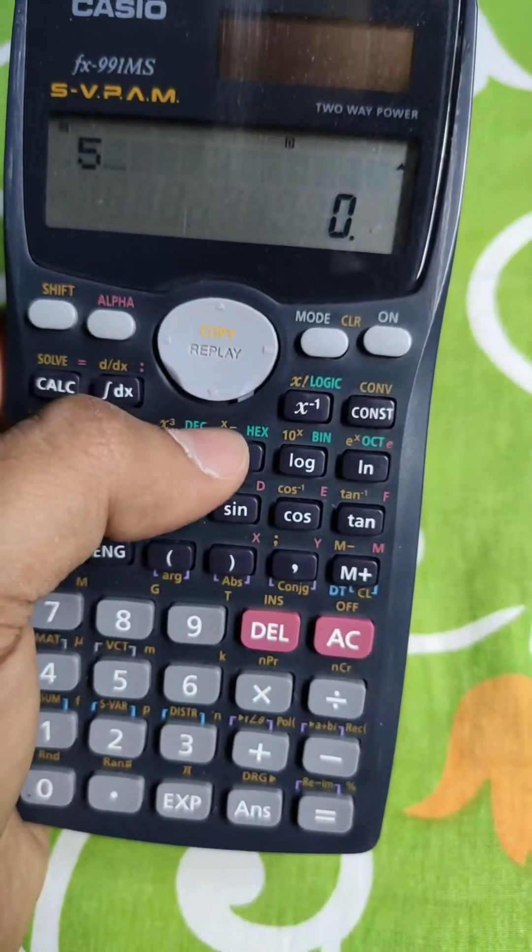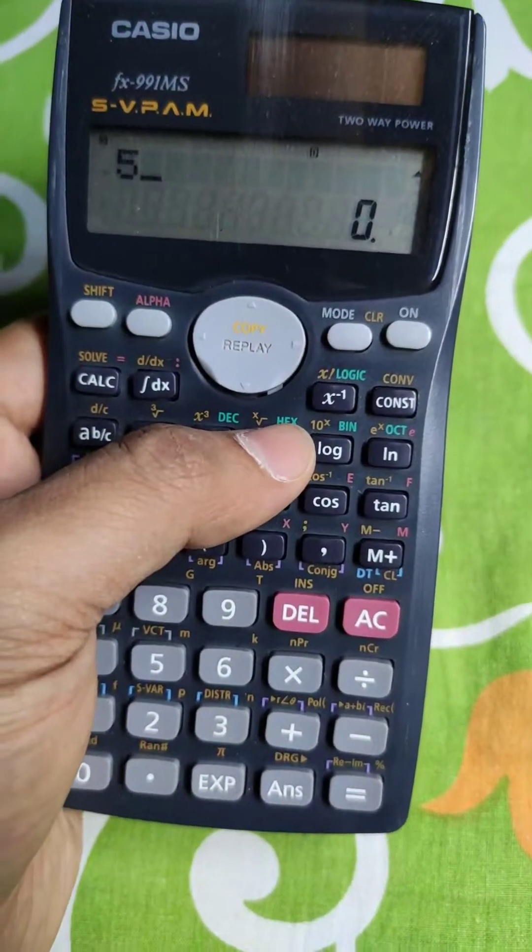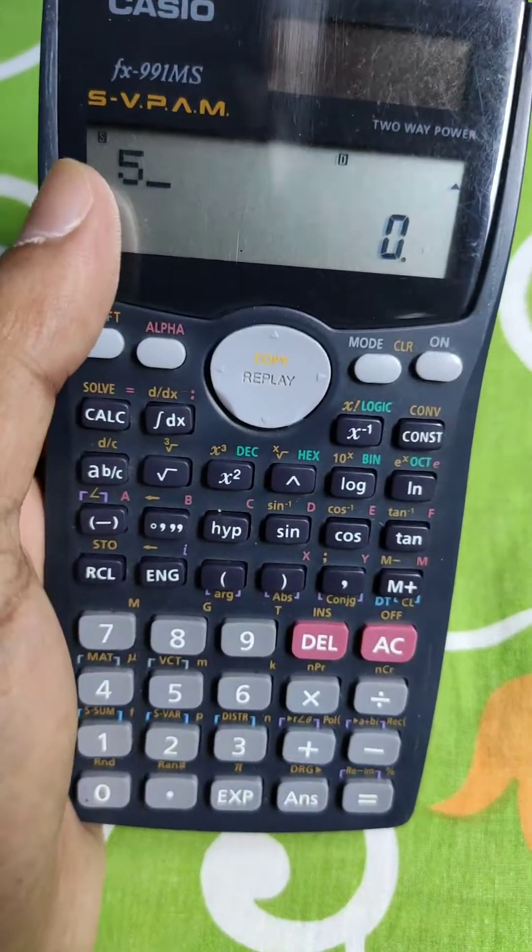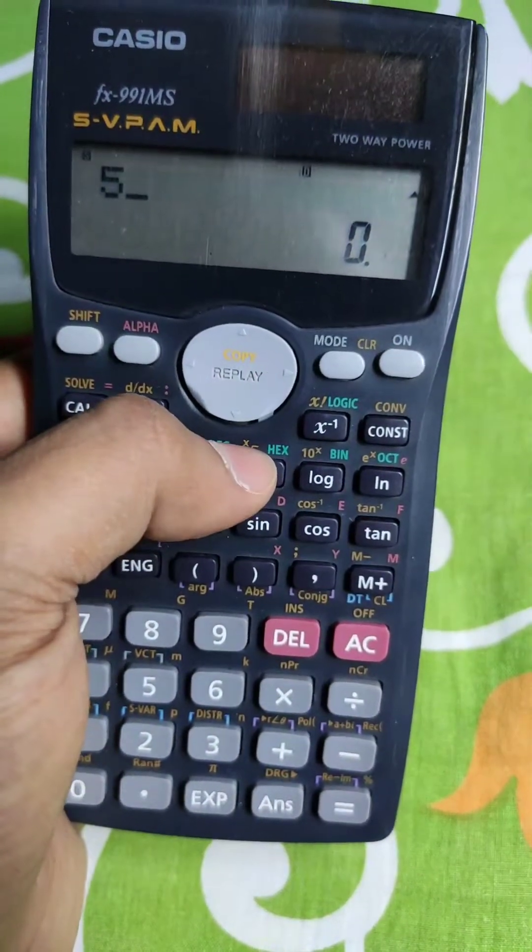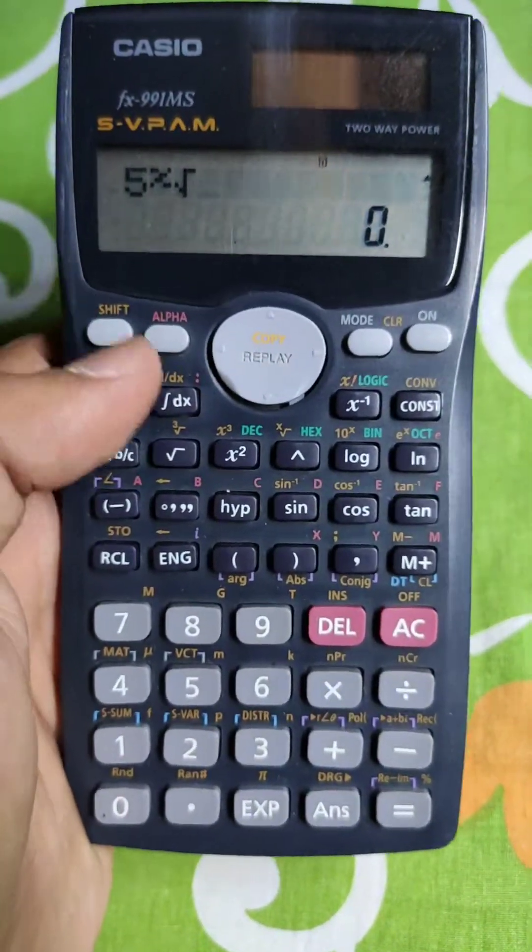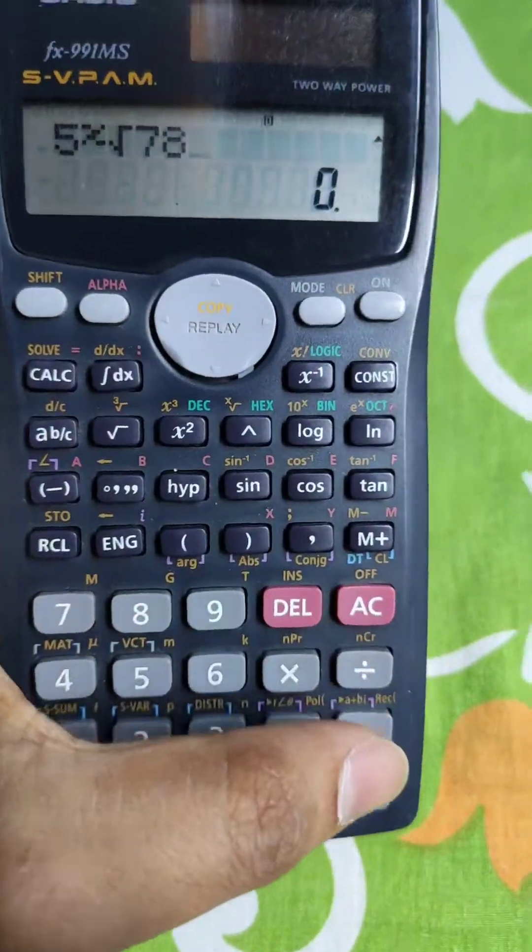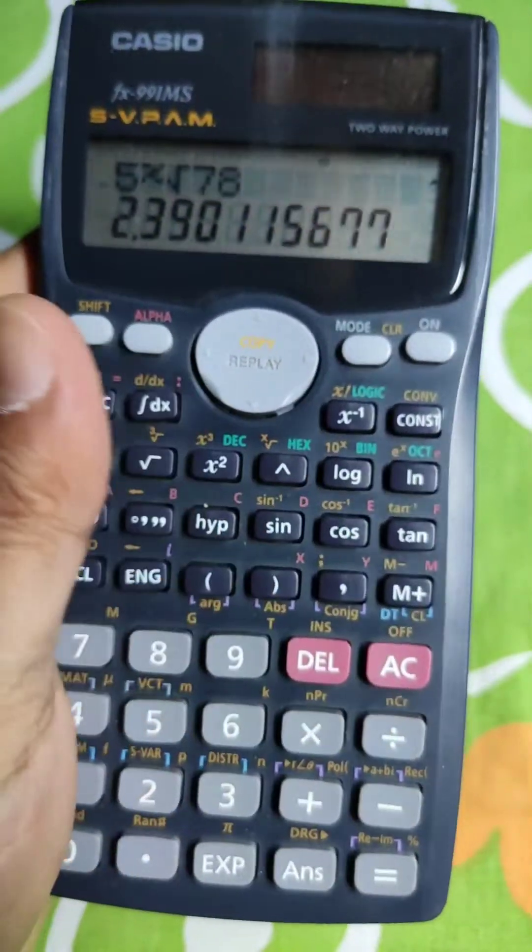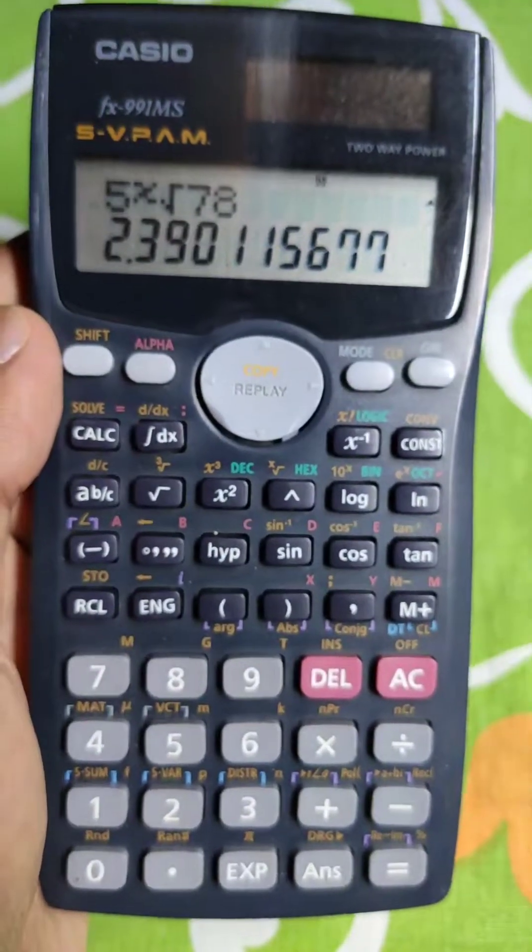Shift. This operator is the nth root operator. Shift is activated. Now this will be activated. Fifth root of, say, 78. This is your answer.